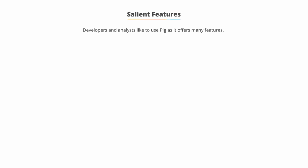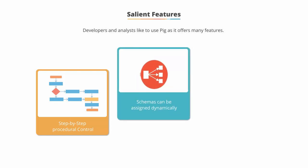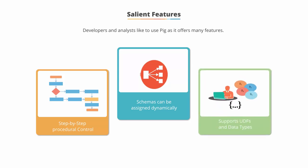Salient features. Developers and analysts like to use Pig as it offers many features. Some of the features are provisioning for step-by-step procedural control and the ability to operate directly over files. Also, schemas that, although optional, can be assigned dynamically. And lastly, support for user-defined functions or UDFs and to allow for various data types for maximum flexibility.